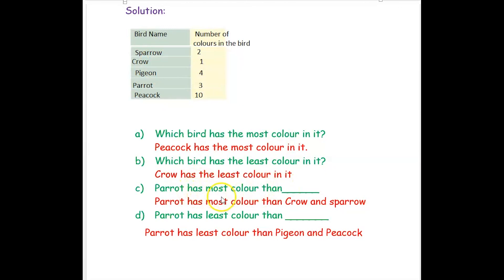Next: parrot has most color than whom? The number of colors in parrot is three. Parrot has many more colors than crow and sparrow, because those two have fewer colors. Parrot is having more color compared to crow and sparrow. So parrot has most colors than crow and sparrow.